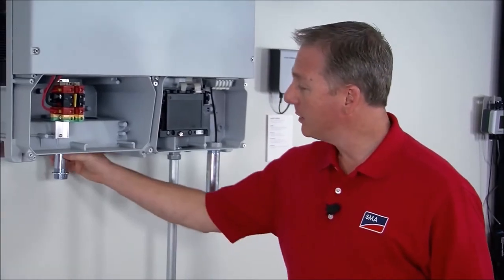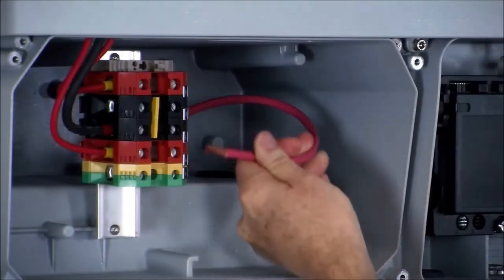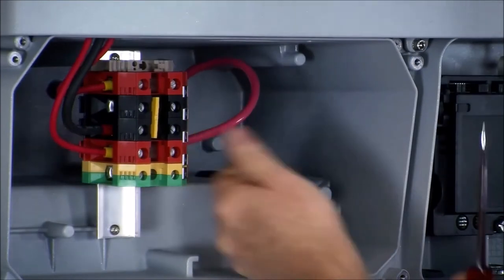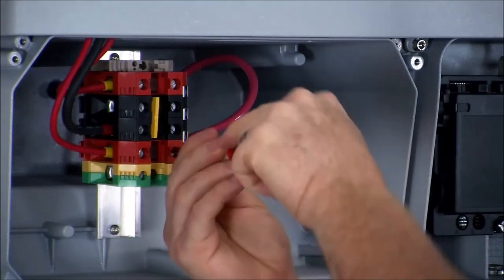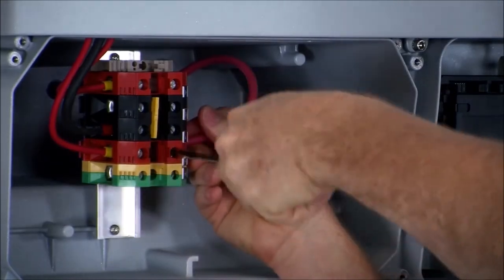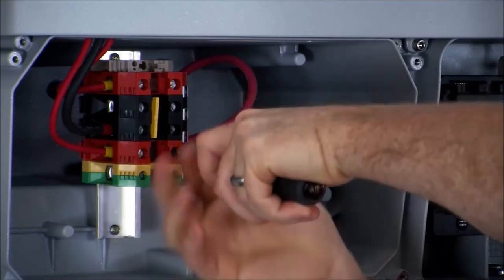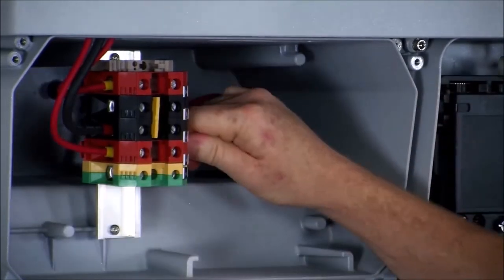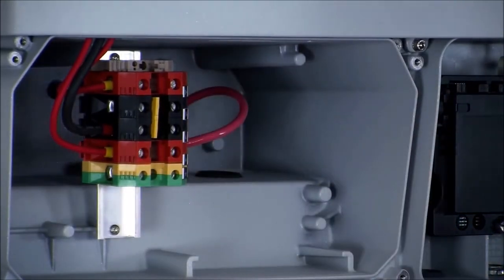Now I've got a piece of conduit here again just to show you how this would go and I'm going to connect these two conductors into the A positive and A negative terminals, meaning this string or set of strings will be going into the A channel maximum power point tracker inside the tri-power.